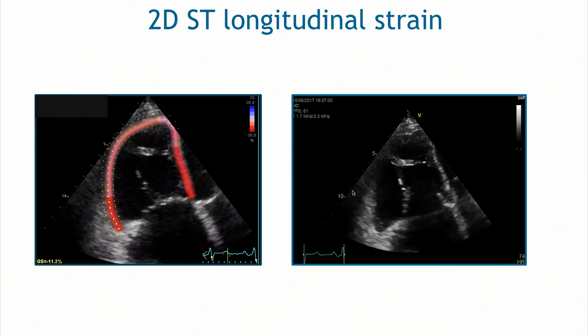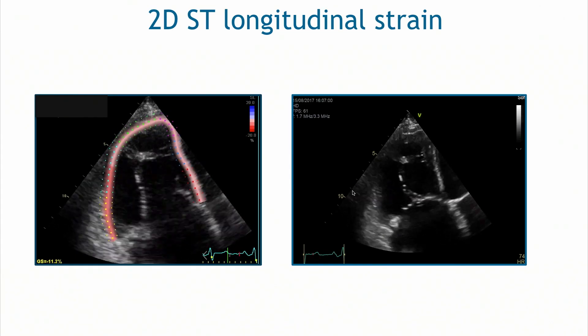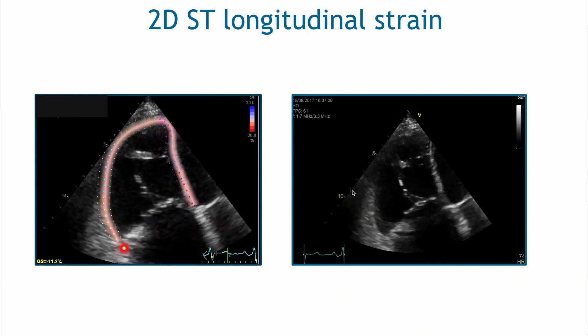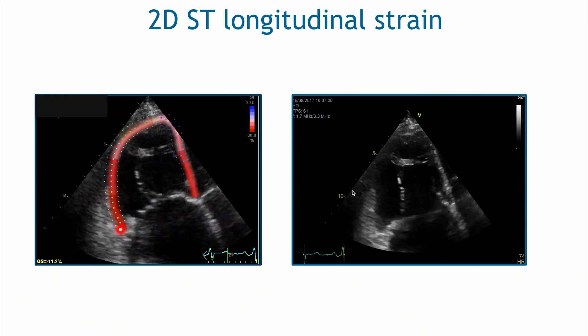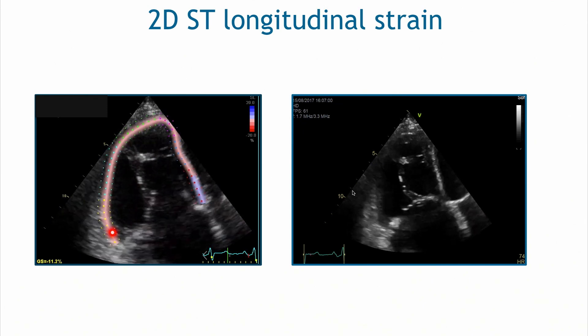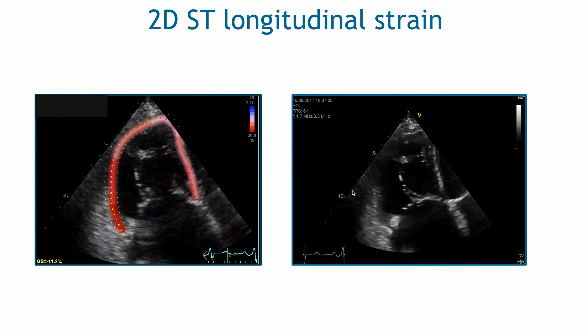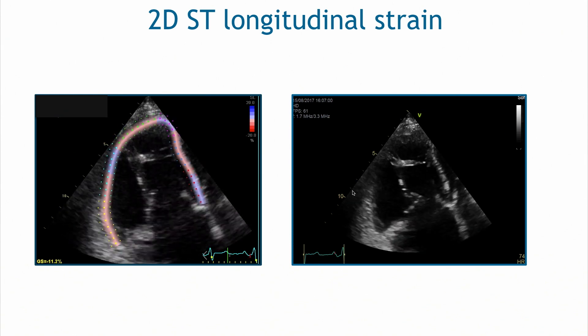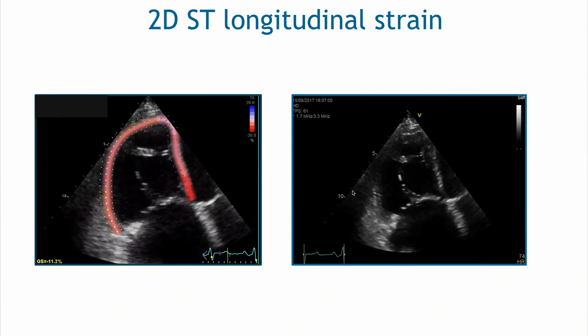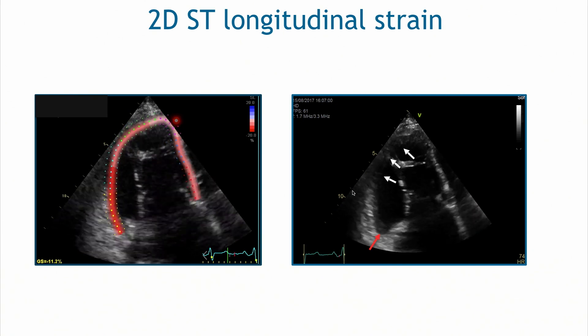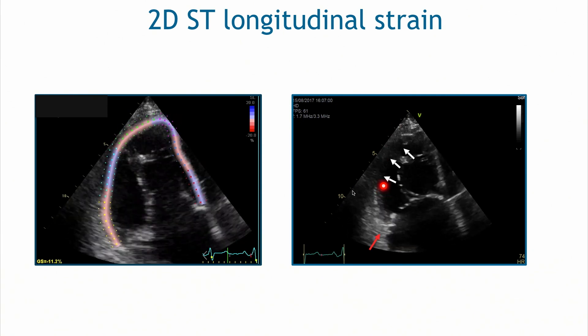Why do we have normal TAPSE and normal S' prime yet reduced longitudinal strain? If we carefully look at these images, we can appreciate that the longitudinal displacement of the basal part of the right ventricle — close to the tricuspid annulus, exactly where we perform measurements of TAPSE and S' prime — is relatively preserved. However, it is absolutely clear that the mid and apical parts of the RV free wall are contracting very poorly.